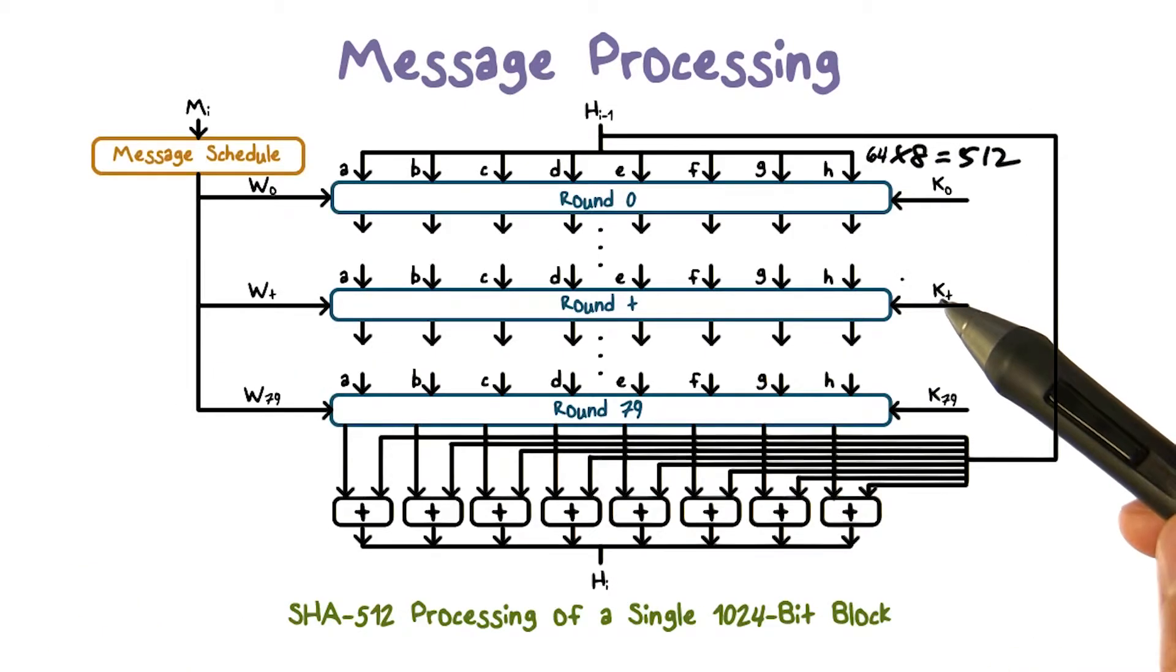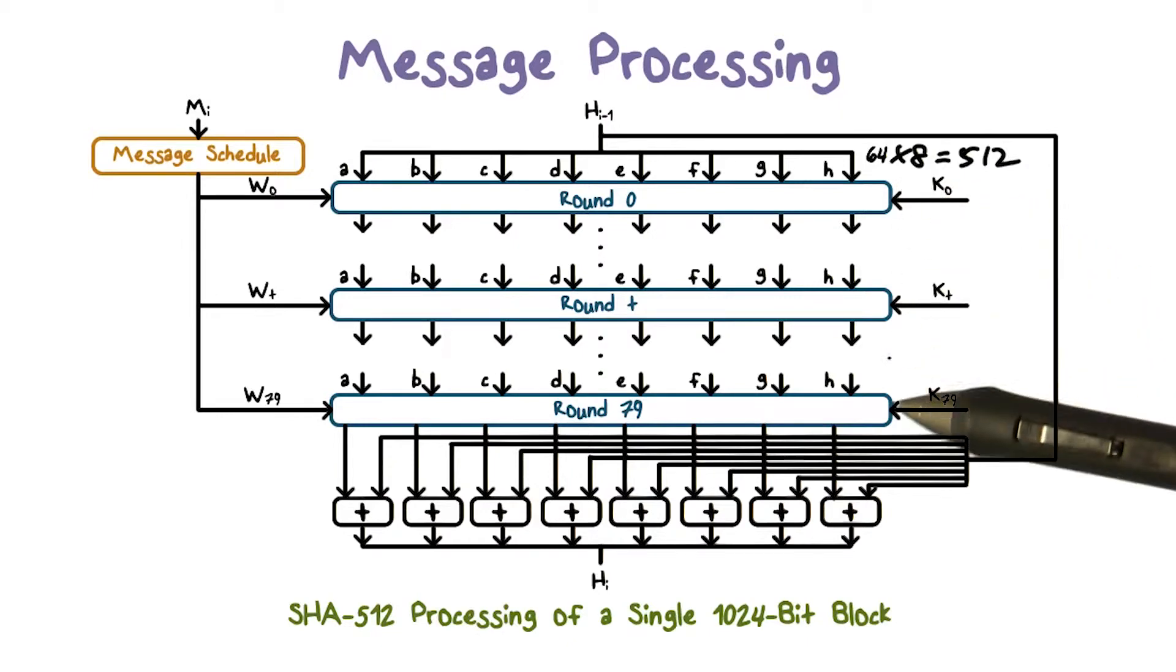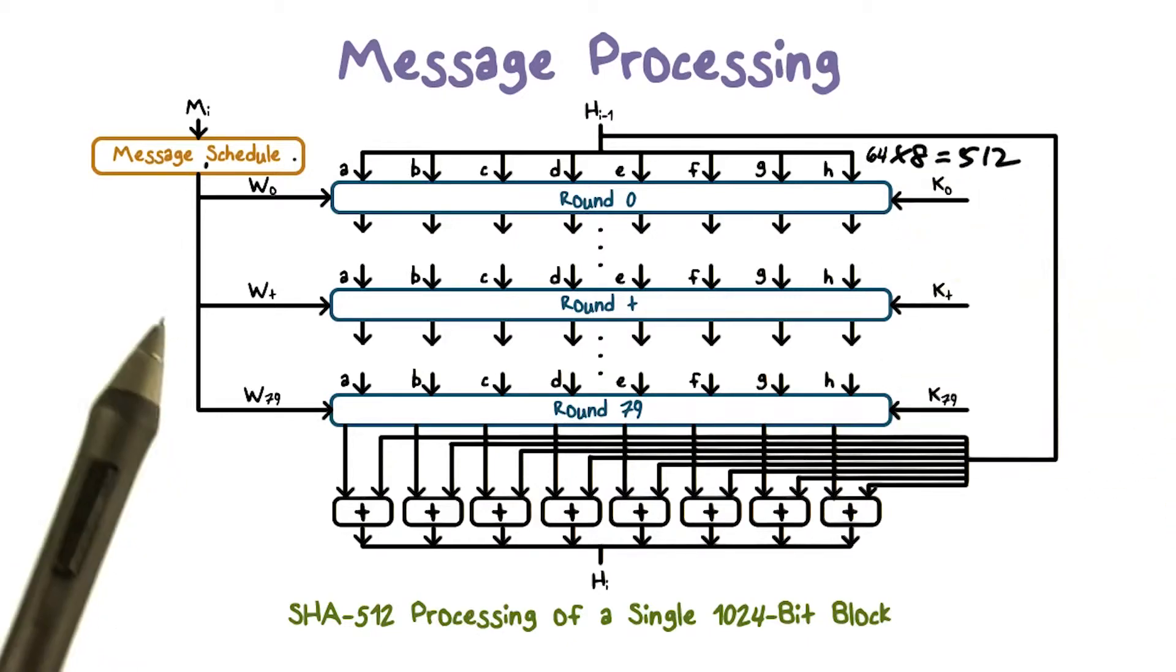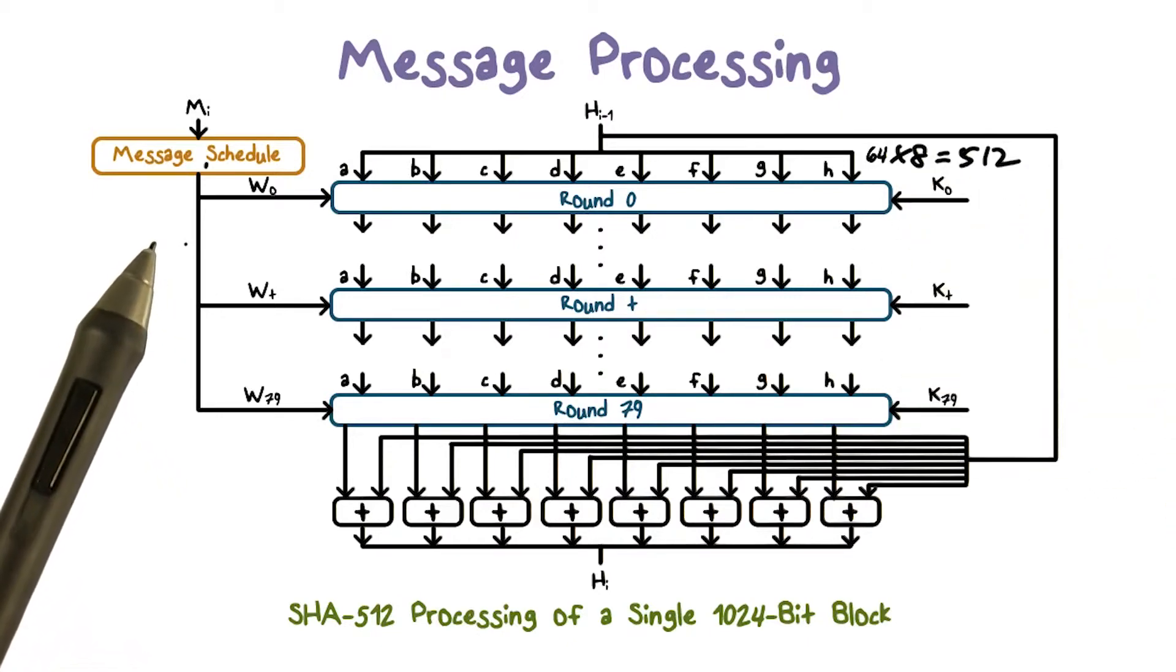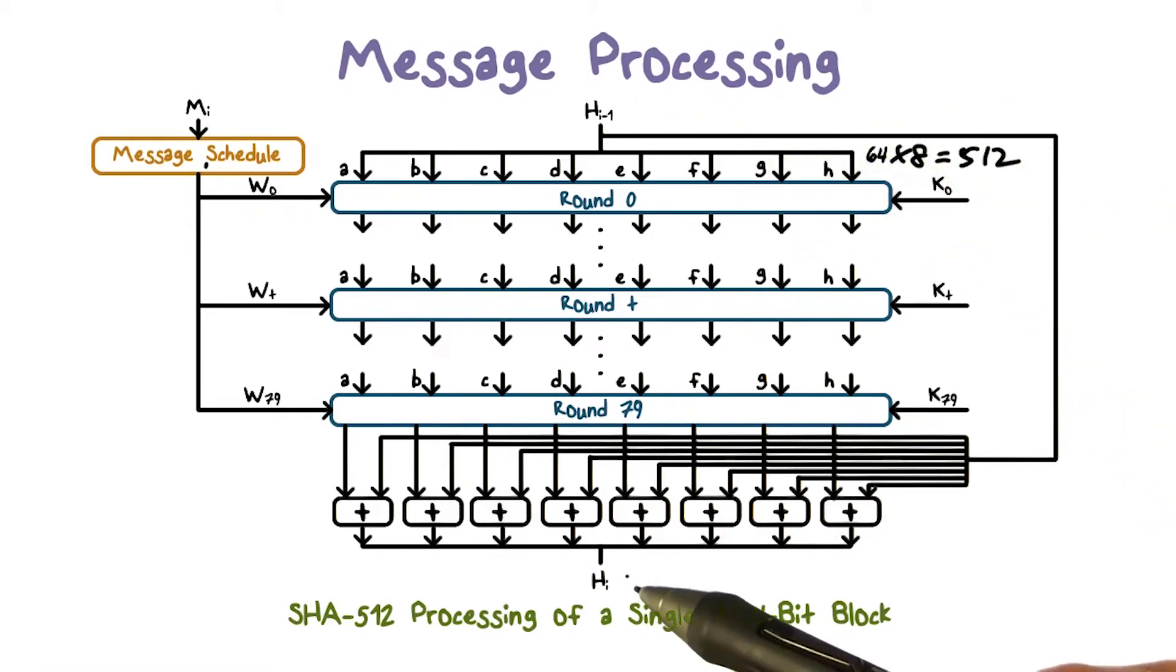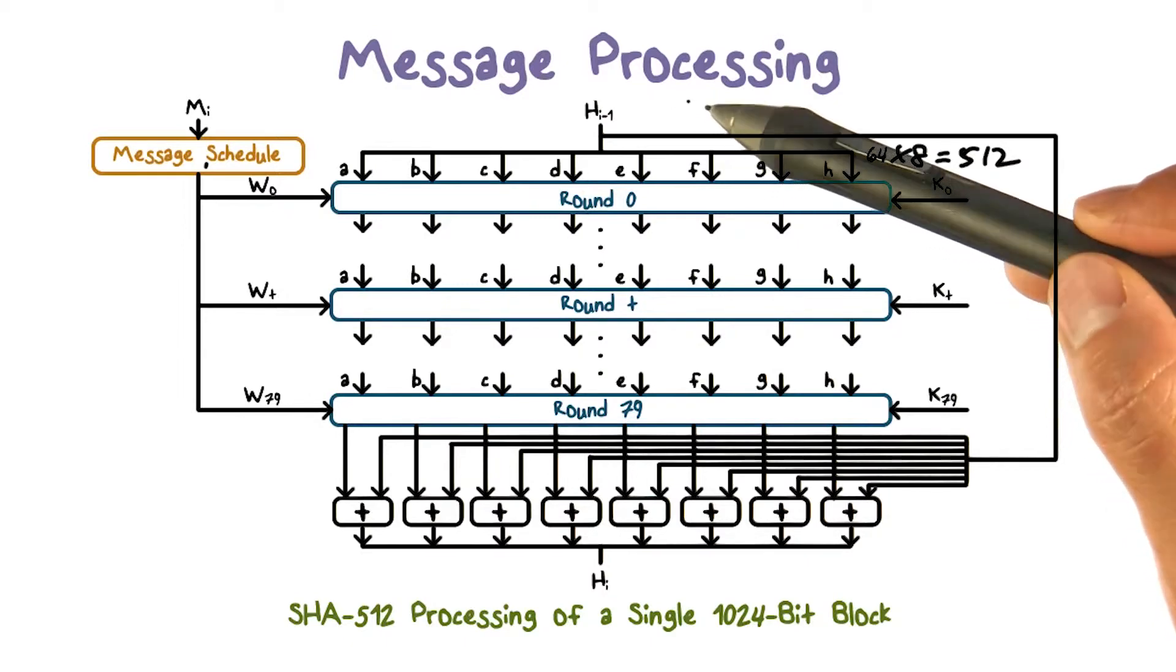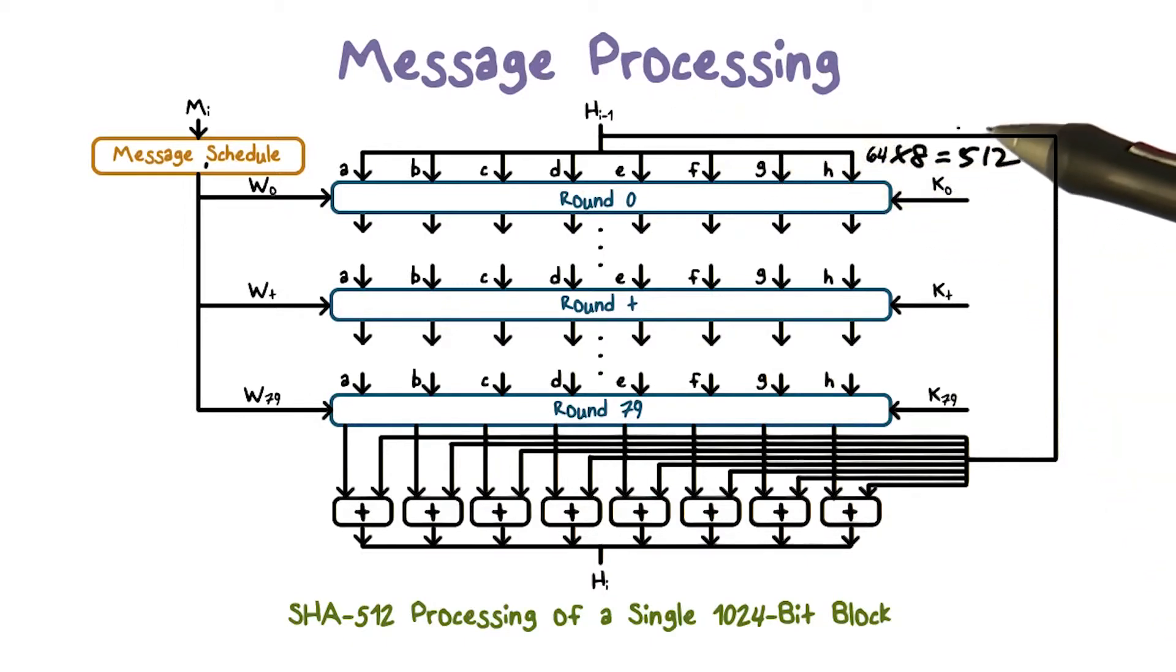Now let's take a look at the processing of a message block. The processing involves 80 rounds. The input includes not only the current message block, but also the result of the processing of the previous block. And the result of the processing of the current block will be the input to the processing of the next block. The result from the processing of the previous block is a 512-bit value.